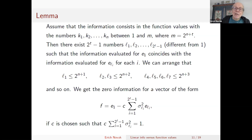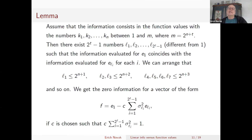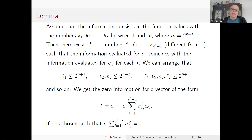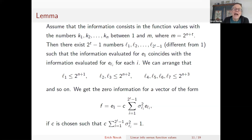To prove good lower bounds it is useful to find many different basis elements that share the same information as e_1. In this way you get zero information for a certain vector f hidden in this expression. This vector f has zero information, so the algorithm cannot distinguish between f and minus f, and therefore you get a lower bound for any algorithm that uses this kind of information.